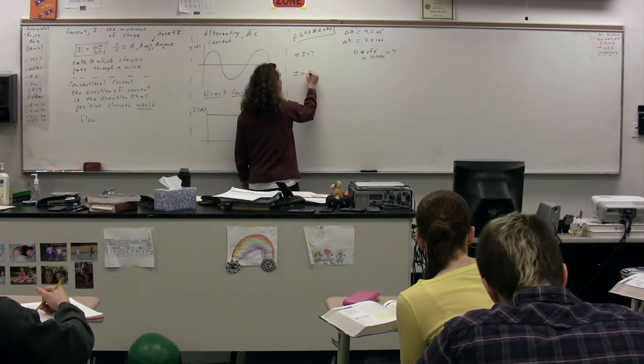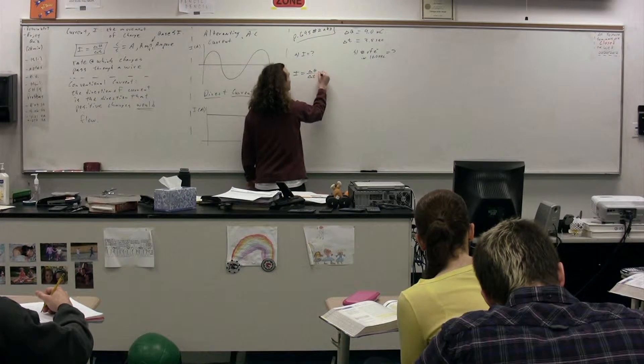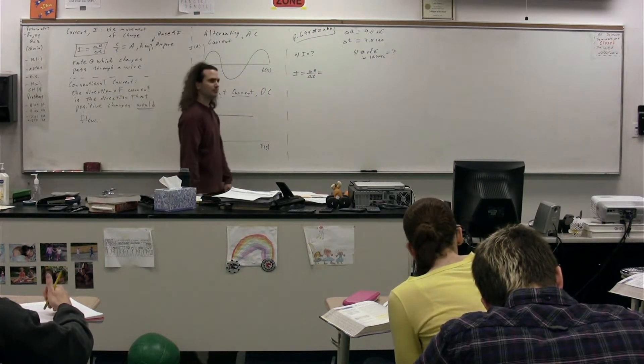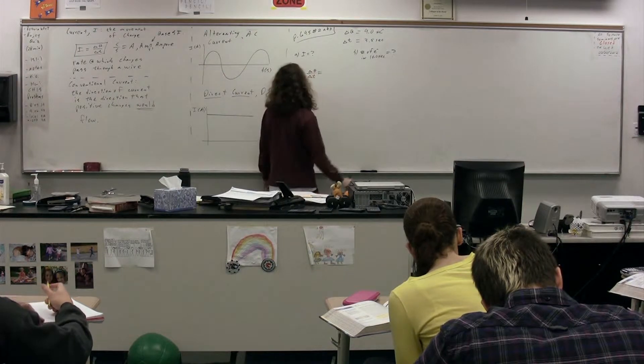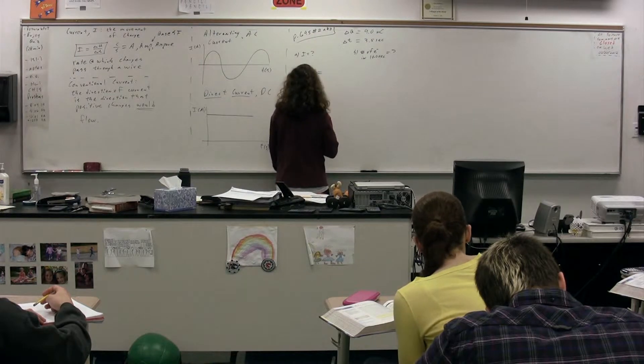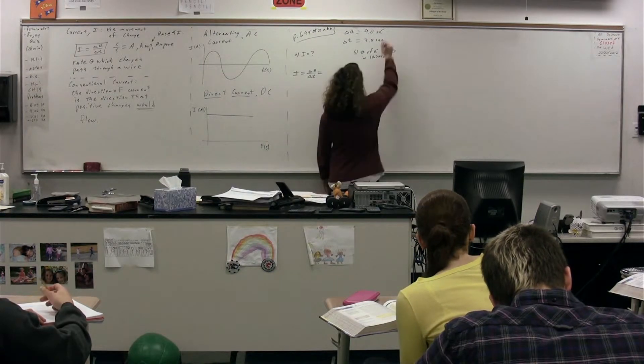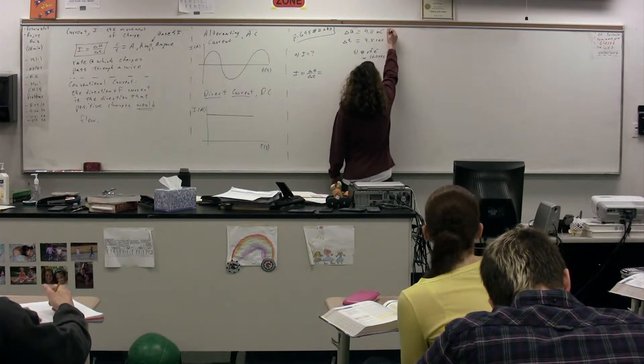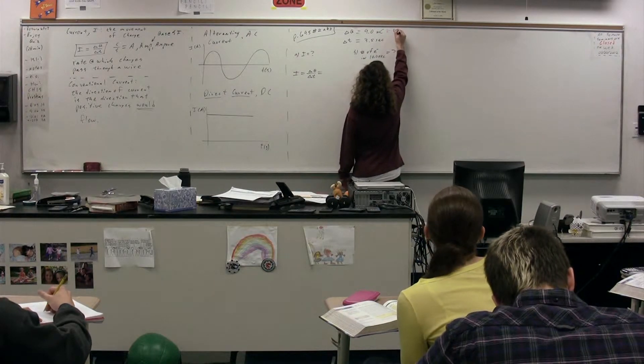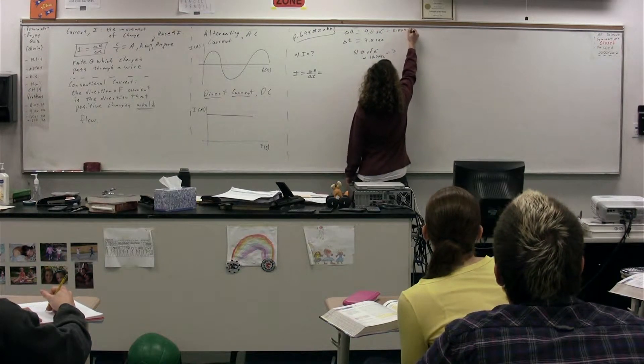So the current is equal to delta q over delta t. Please give me the numbers. 0.0090. I don't see that number anywhere up here. How do you convert? You divide it by 1,000. We can do this one in our head by now. So 0.009 what? Coulombs.